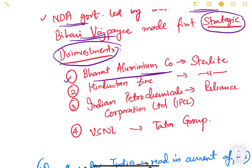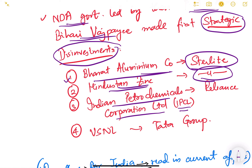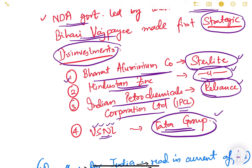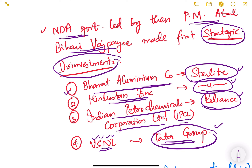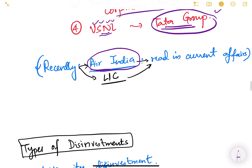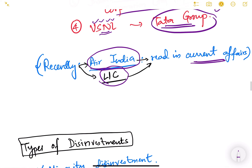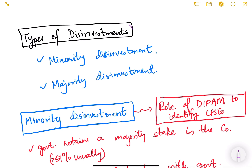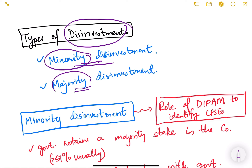When was the first strategic disinvestment done in India? It was done by the NDA government. Examples include: Bharat Aluminium Company was sold to Sterlite, Hindustan Zinc was sold to Sterlite, Indian Petrochemical Corporation Limited (IPCL) was sold to Reliance, and VSNL (Videsh Sanchar Nigam Limited) was sold to the Tata Group. These were the first strategic disinvestments in the country under Prime Minister Atal Bihari Vajpayee. Recently, Air India and LIC disinvestments have also taken place — these are current affairs relevant to this topic.